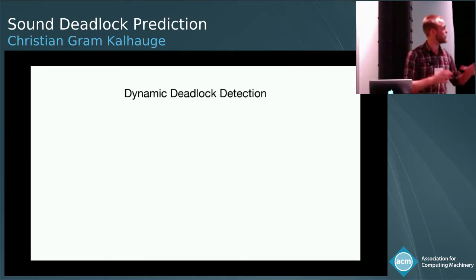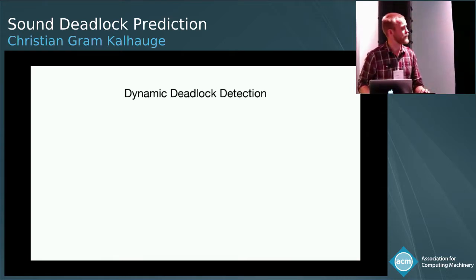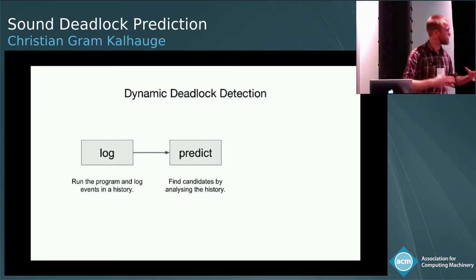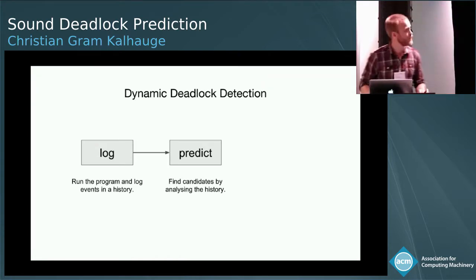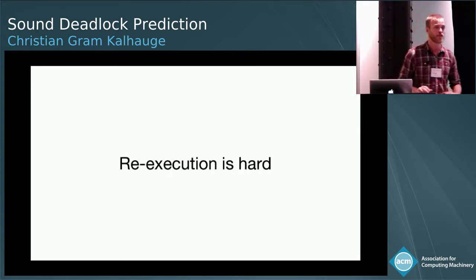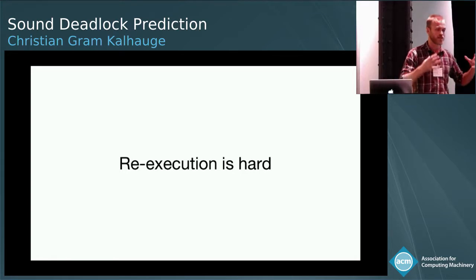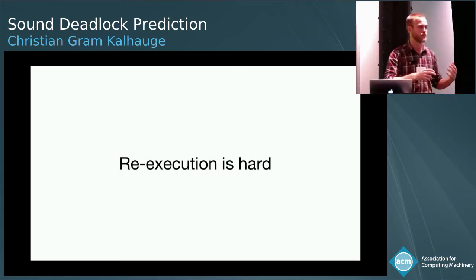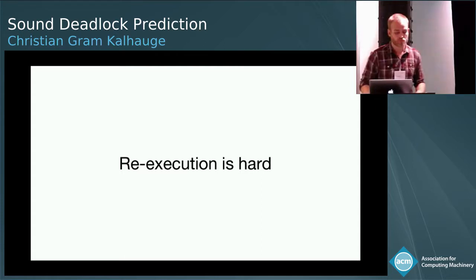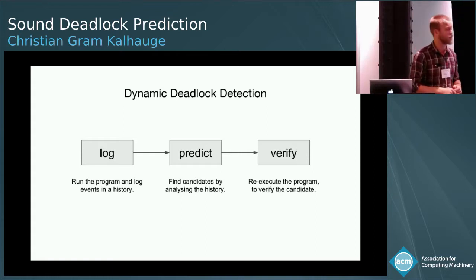Let me talk a little bit about dynamic deadlock detection as a base. It normally works in three stages: first we log a history, then we do some hard thinking about the problem, and then we predict some possible candidates. Then we verify the candidates by re-executing the program. But there's just one problem: re-execution is hard. There are really good tools that do a great job of actually executing these things afterwards, but it requires that you keep the state of the program very consistent — if you download things from the internet, or events happen, or the file system changes, all of these things you have to keep consistent if you want to re-execute.